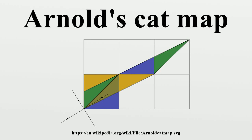In mathematics, Arnold's cat map is a chaotic map from the torus into itself, named after Vladimir Arnold, who demonstrated its effects in the 1960s using an image of a cat, hence the name.